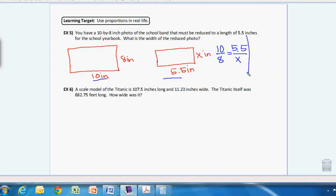So 5.5 compared to X. If you think of it like you want to set the lengths equal to the widths, you could do that. So if I had 10 compared to 5.5, and that would be equal to, since I started with the lengths, and I started with the larger photo, I'm going to then start with my 8 over X.